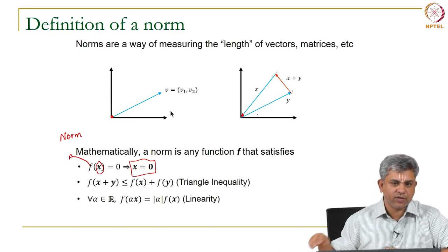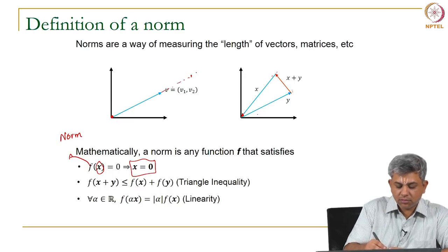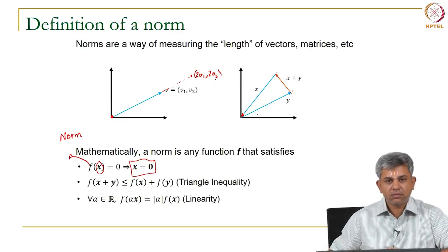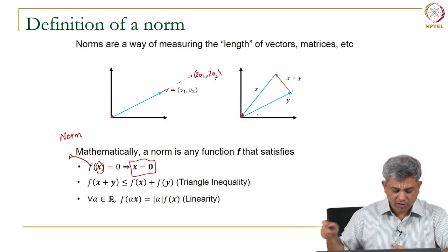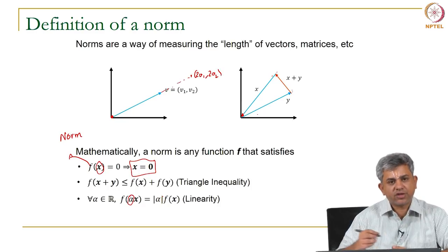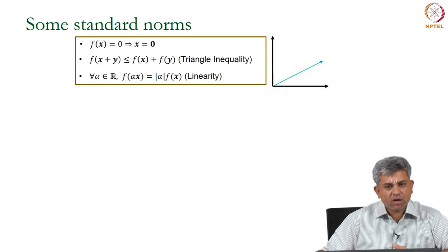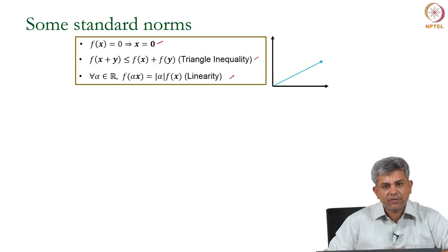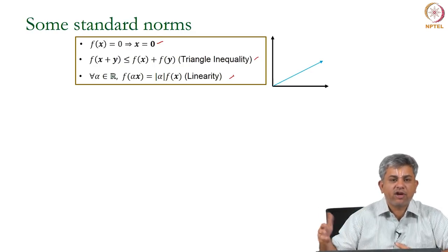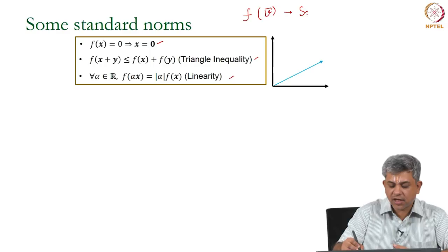The third property a norm satisfies is linearity. If you take a vector and simply scale it up — say extend it by a factor of alpha — then each of the coordinates increases by a factor of alpha, so its length also increases by a factor of alpha. These are the three properties that any norm satisfies. Based on these three — the idea of zero, triangle inequality, and linearity — we can derive many different functions that satisfy them. The norm F takes in a vector and gives a positive scalar.